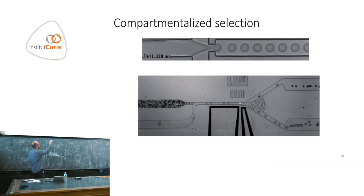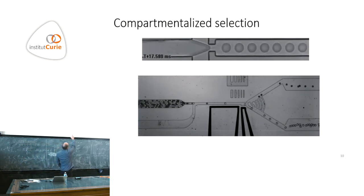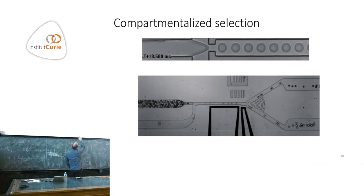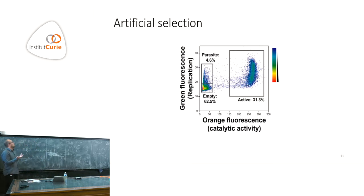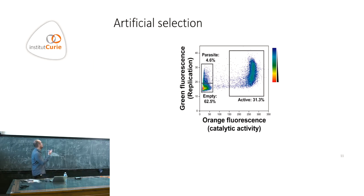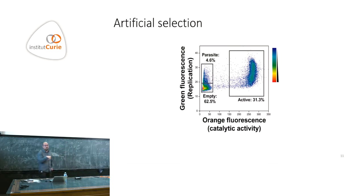You obtain images where each dot is a droplet. Green fluorescence is a reporter for replication (DNA intercalant) and orange fluorescence is the ribozyme assay. You see three types: empty compartments (no signal), active compartments (both replicate and have metabolic activity), and parasites (replicate but lack metabolic activity). You can run the experiment in different conditions: bulk experiment shows very rapid system collapse; compartments without selection slow the collapse because parasites only invade their own compartment; with the selection protocol, it should stay stable.